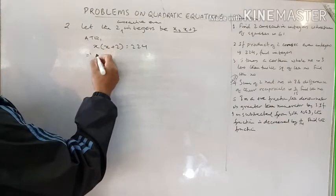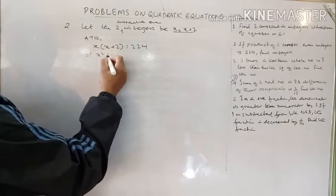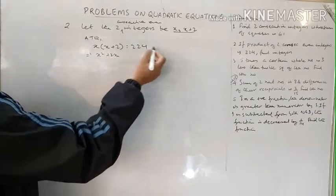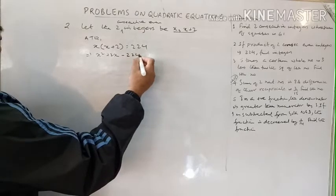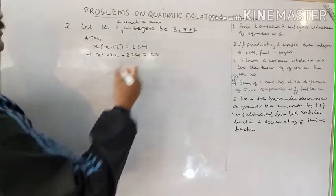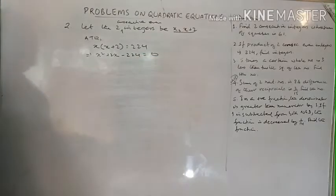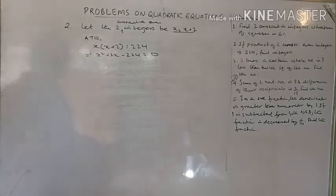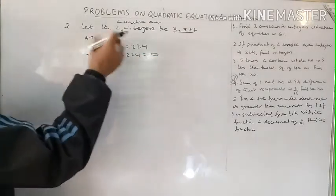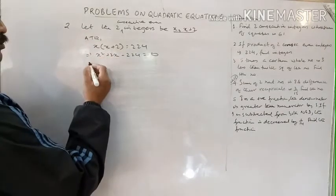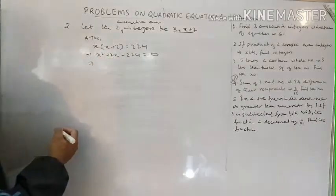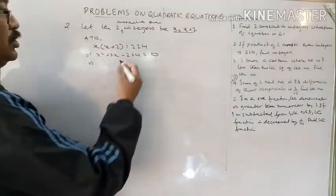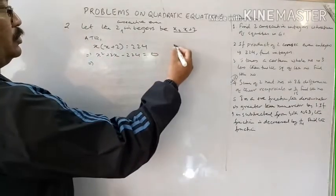Opening the bracket: x squared plus 2x minus 224 equals 0. Now use the middle-term breaking method to factorize. Find factor pairs of 224.